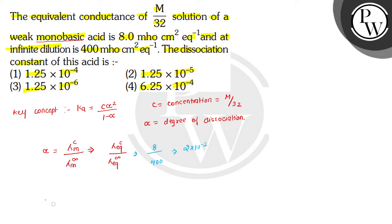Now we can see that the value of alpha is less than 1. So if it is less than 1, then the term (1-α) can be neglected. So Ka = Cα².